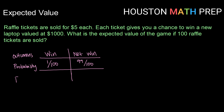The third thing we need to think about is the payout. If we don't win, we lost the $5 that we spent on the raffle ticket, so we have a payout of negative $5. If we do win, we have a new laptop valued at $1,000 minus the $5 we paid for our raffle ticket, so we have a payout of positive $995.